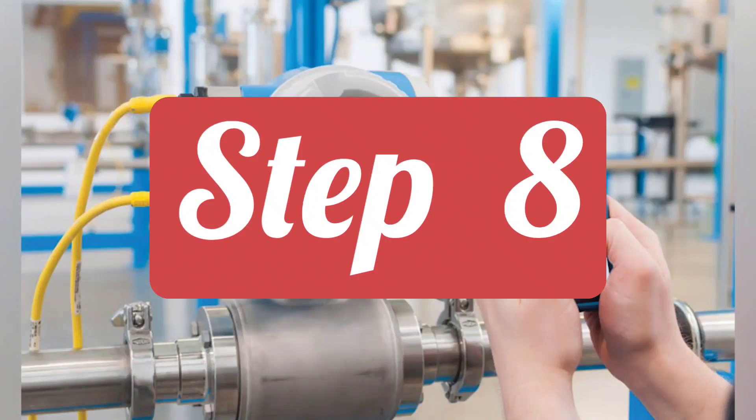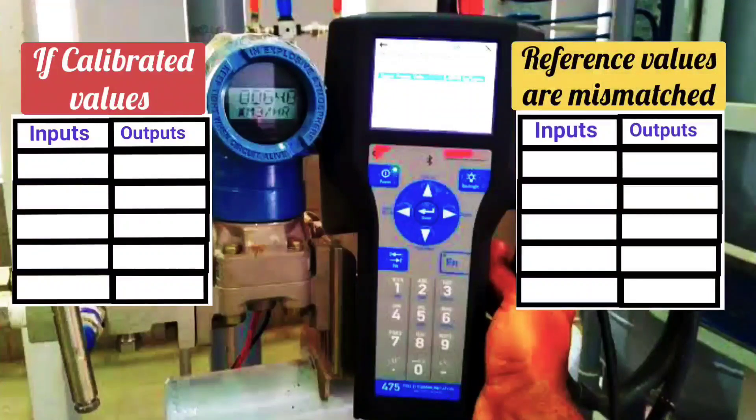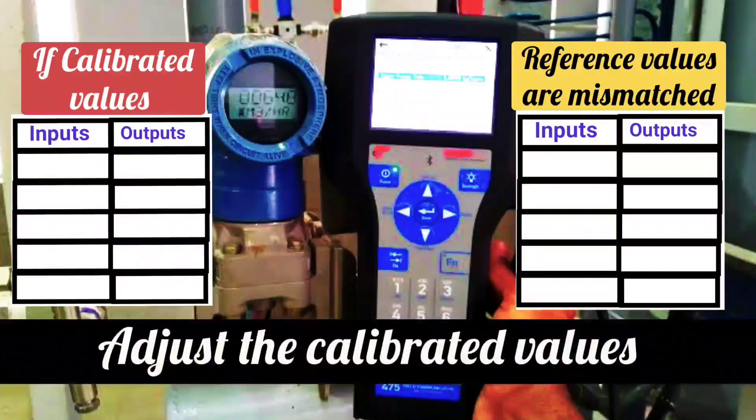Now let's see what to do in the next step. If calibrated value and the reference value are mismatched, then adjust the calibrated values.